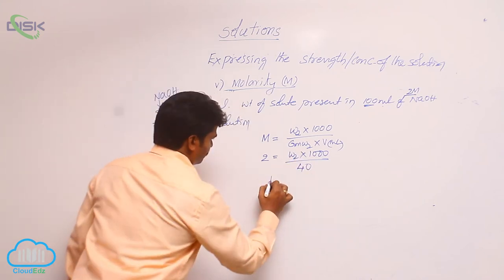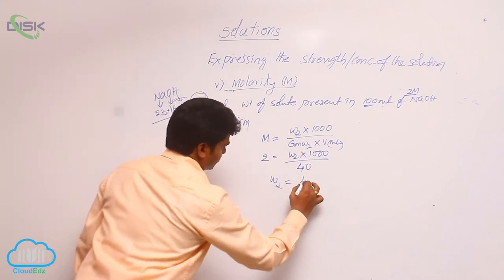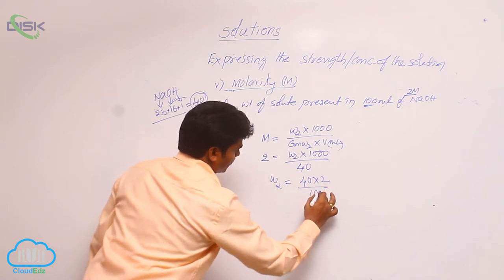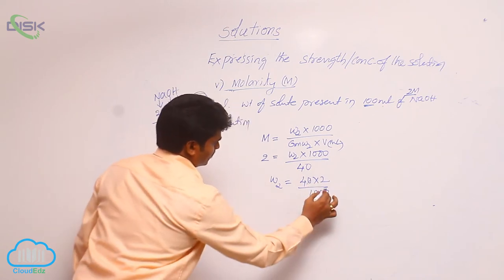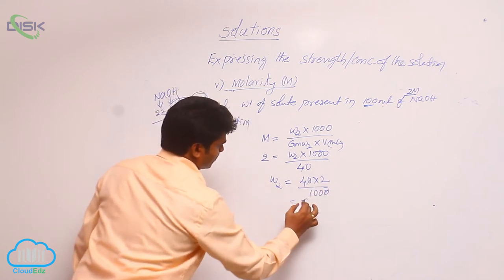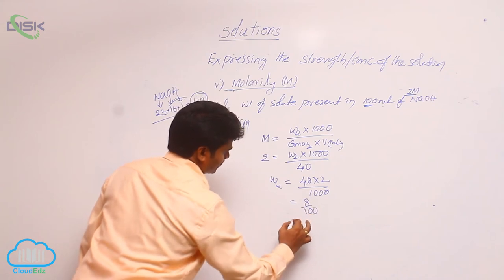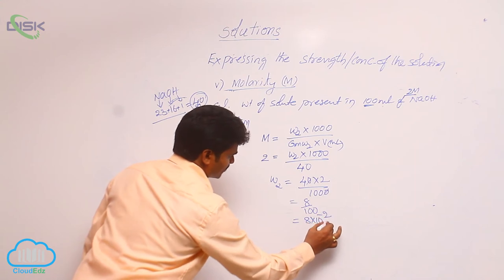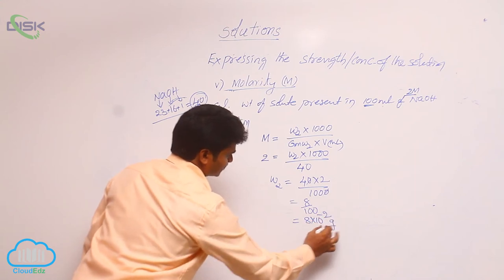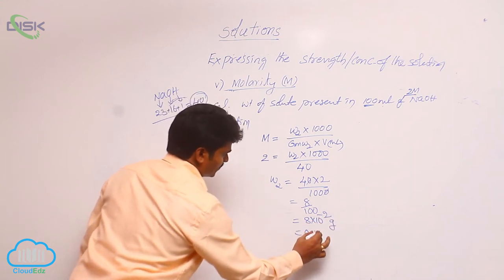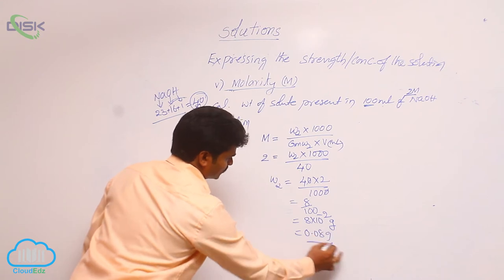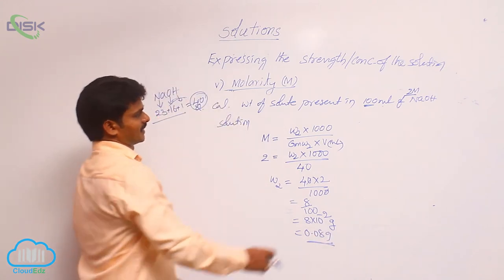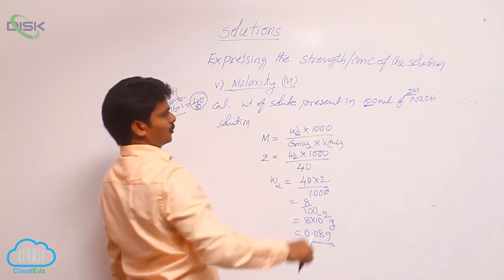If you solve this, you will get 40 into 2 divided by 1000, that means 8 by 100, that means 8 × 10⁻² grams, so 0.08 grams. This is the amount of solute present in 100 ml of 2 molar NaOH solution.